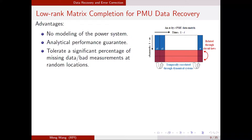The advantages of using low-rank matrix completion: first, no modeling of the power system is needed — the only assumption is that the matrix is low-rank; we do not need to know the topology, parameters, or dynamic model. Second, the approach is guaranteed to recover the ground truth data under mild assumptions. Third, in numerical experiments, these approaches can tolerate a significant percentage of missing data or bad data. However, there are also limitations.